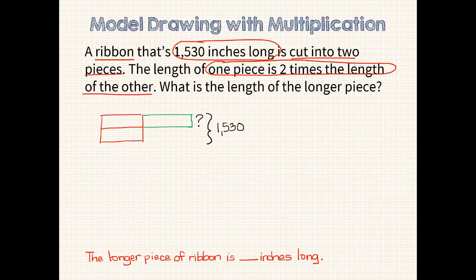The model is ready to talk to us and tell us what to do for the math. We first need to find out how long each section is, and we know that there are 3 units and they total 1,530. That means that 1 unit will be 1,530 divided by 3, which is 510 inches. Now we can fill those unit bars in. Now I can find out the length of the longer piece by adding 510 plus 510 to get 1,020. The longer piece of ribbon is 1,020 inches long.